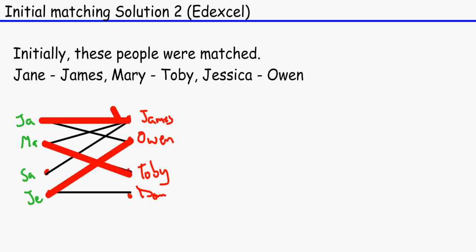Now what happens, like AQA, you start with a node which is not in the initial matching, shall we say. And we start with Sarah. So what we do, we travel - and you need to write this down - we travel from Sarah to James. Okay, because that's the only person Sarah is compatible with.